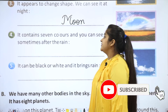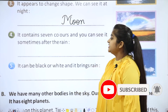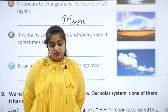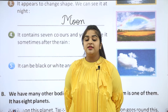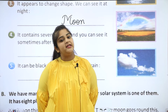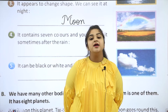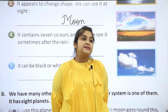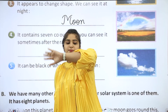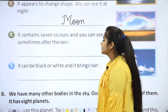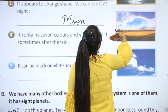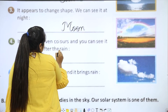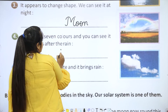It contains seven colors and you can see it sometimes after the rain. There are seven colors and it is very beautiful. And the answer is rainbow.